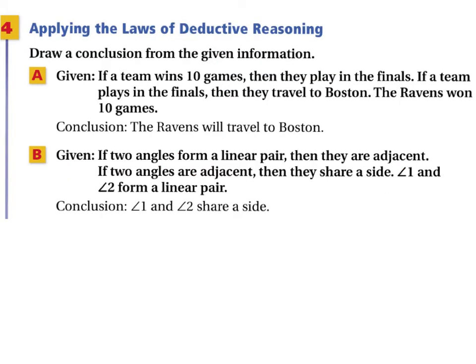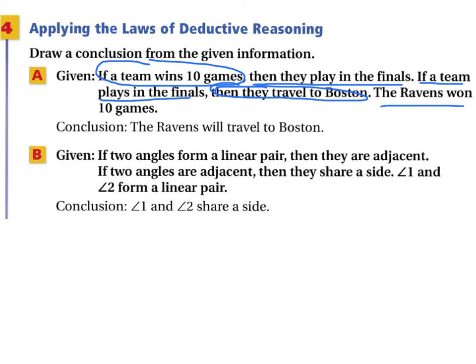In our last example, we apply the laws of deductive reasoning to draw our own conclusions. Part A — Given: if a team wins ten games, then they play in the finals. If a team plays in the finals, then they travel to Boston. The conclusion of the first matches the hypothesis of the second, so by the law of syllogism: if a team wins ten games, then they travel to Boston. Since the Ravens won ten games, the conclusion is that the Ravens will travel to Boston.